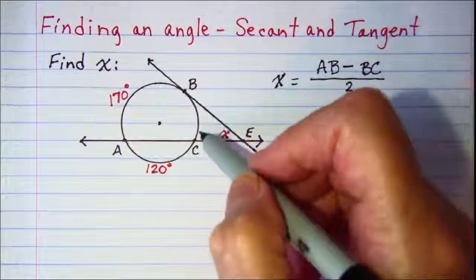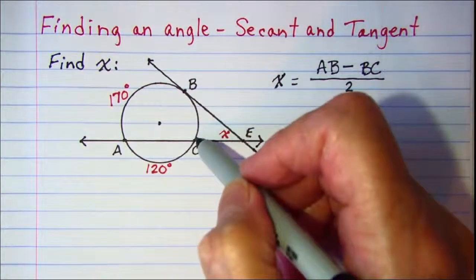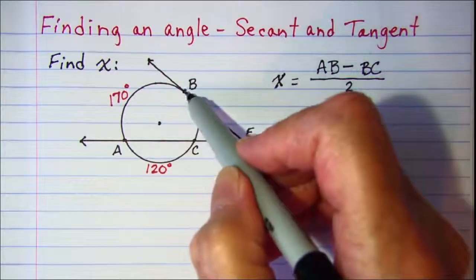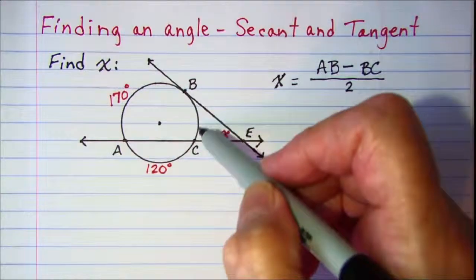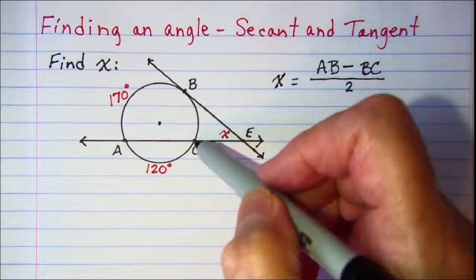Now we don't know the measure of arc BC but we do know that the three arcs together add up to 360 degrees.